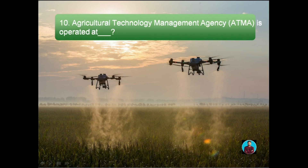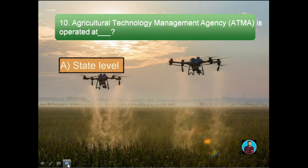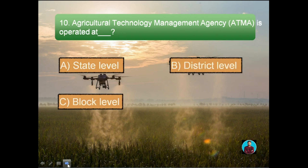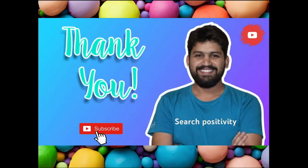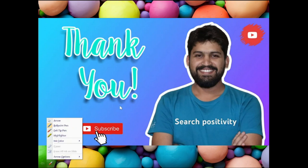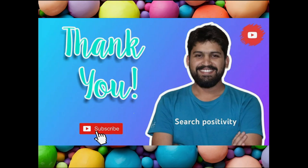Question number ten: Agricultural Technology Management Agency (ATMA) is operated at which level? Option A: State level, Option B: District level, Option C: Block level, Option D: Village level. The answer is district level. If you like this content, please do like, share, and comment in the comment box. Thank you.